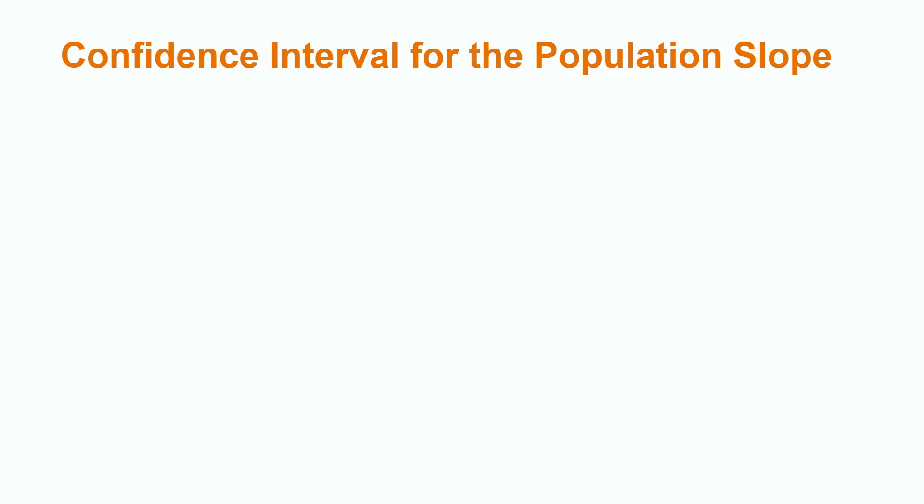Although we can use a hypothesis test for the population slope to tell us whether or not there is a relationship between two variables, confidence intervals can give us an estimate of the actual value of the population slope. Keep in mind that confidence intervals have an upper and lower interval. The upper interval is calculated by multiplying t-star by the standard error of beta1 and then adding that value to the actual value of beta1. The value of t-star is found by using a t-table with n minus 2 as our degrees of freedom in the rows and the alpha level divided by 2 in the columns.